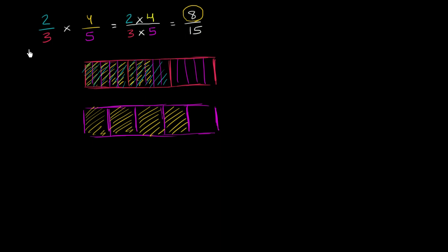And now we want to take 2 thirds of that. Well, how can we do that? Well, let's split each of these 5 into 3 pieces. So now we have essentially fifteenths again. 1, 2, 3, 4, 5, 6, 7, 8, 9, 10, 11, 12, 13, 14, 15.